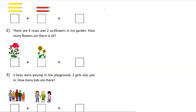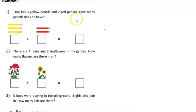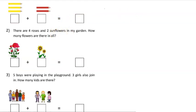Let's count these images. We have one, two, and three, plus one, two — so we have five pencils. Tom has five pencils. Let's look at the other example. You are told: there are four roses and...